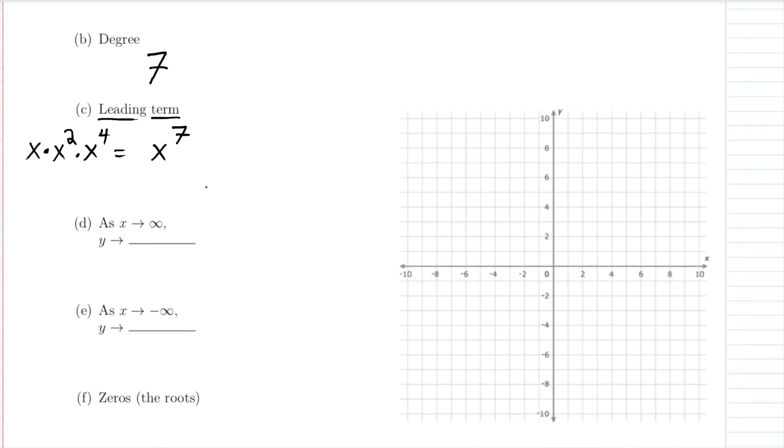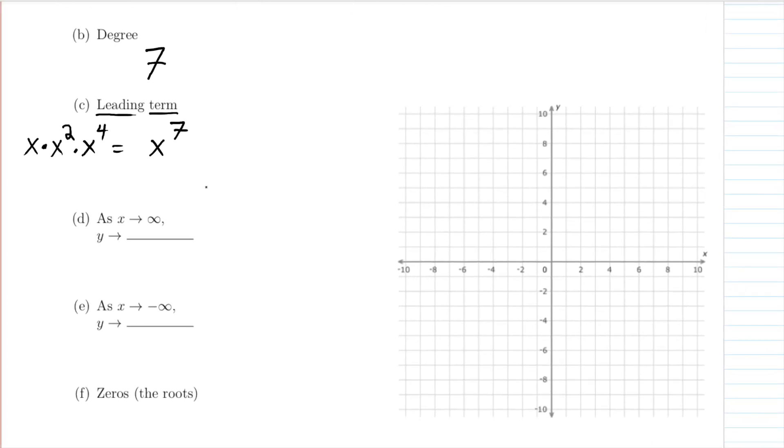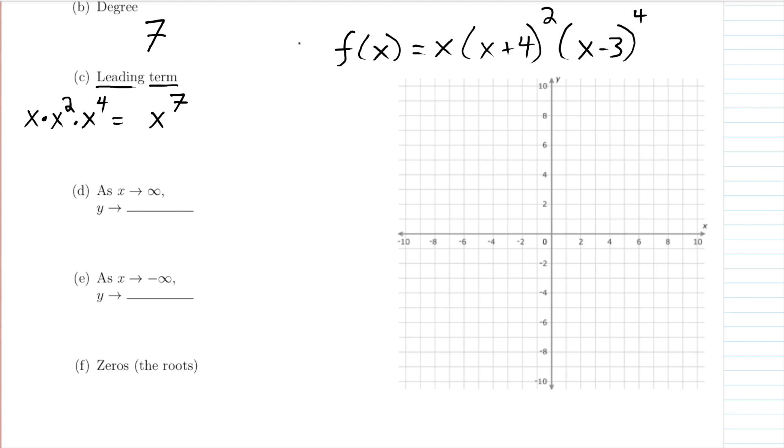These next two questions are questions about the end behavior. And so I've just gone ahead and rewrote the function here so we can see it. This is saying as x gets really, really big, as it gets closer to infinity, what does y do? And because the leading term is an odd degree, and because the coefficient of the leading term is this sort of hidden one here, and that is positive, we know that the shape of this thing is going to generally be like this. We call this the end behavior. The part in the middle here might do some different stuff, but generally speaking, if we zoomed way out, this polynomial is going to look like an s.